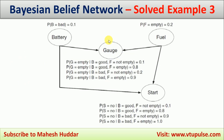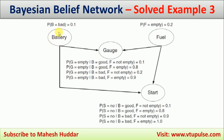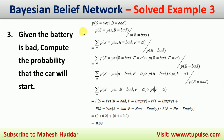The third question involves a marginal probability. Given that the battery is bad, we need to compute the probability that the car will start. This is represented as P(S=yes | B=bad). This is a conditional probability, so it expands to P(S=yes, B=bad) divided by P(B=bad).